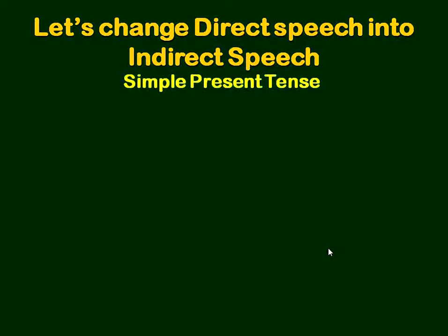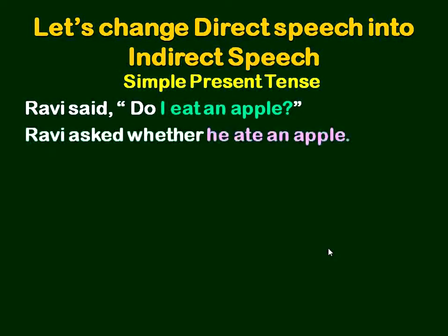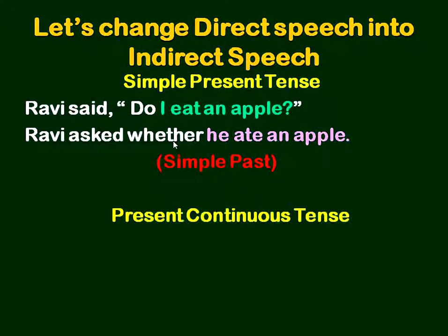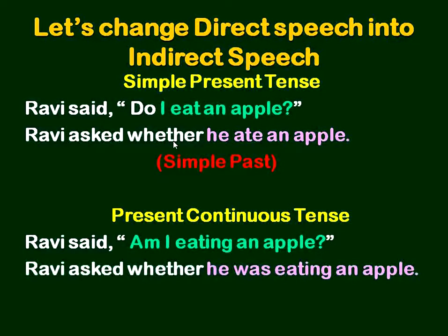If the interrogative is in simple present: Ravi said, 'Do I eat an apple?' The answer is: Ravi asked whether he ate an apple. You can use 'if' or 'whether' here. So the simple present changed into simple past. Now let us understand the present continuous sentence. Ravi said, 'Am I eating an apple?' Ravi asked whether he was eating an apple. So present continuous changed into past continuous.